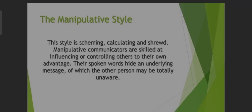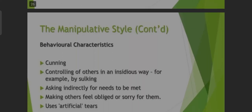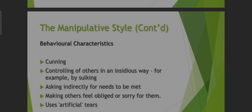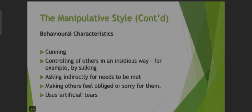The manipulative style is scheming, calculating, and shrewd. Manipulative communicators are skilled at influencing or controlling others to their own advantage. Their spoken words hide an underlying message of which the other person may be totally unaware. Behavioral characteristics include: controlling others in an indirect way, for example by sulking; asking indirectly for needs to be met; making others feel obliged or sorry for them; and using artificial tears.